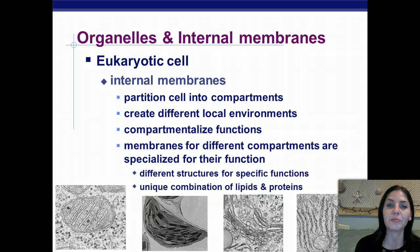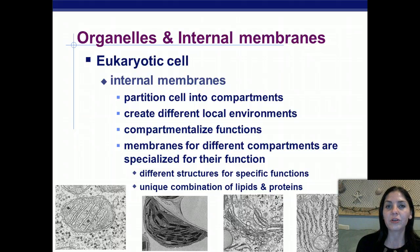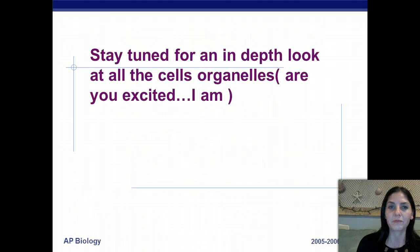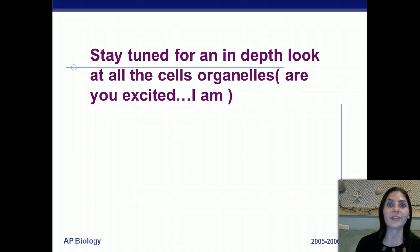Eukaryotic cells have internal membranes that partition the cell into compartments, creating different local environments with compartmentalized functions. Membranes for different compartments are specialized for their function, with unique combinations of lipids and proteins. Stay tuned for an in-depth look at all the cell organelles.